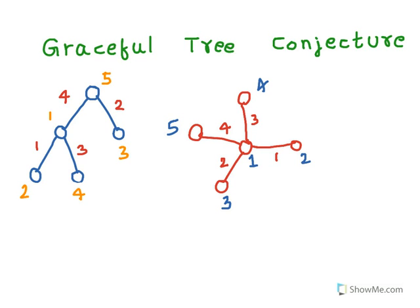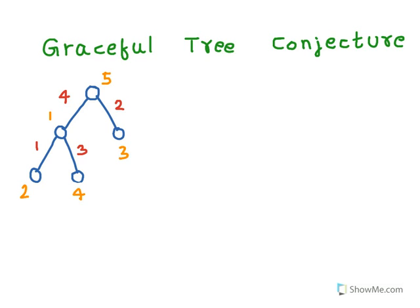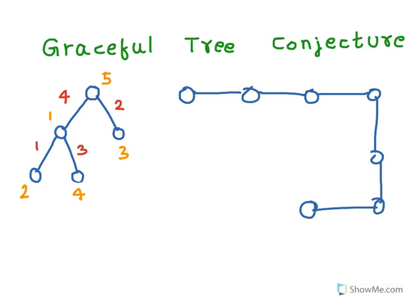Now let's take one more example. Let's look at a path and we'll find a graceful labeling of this path. I will assign one to the first vertex and I'll skip a vertex and assign two to the next vertex.